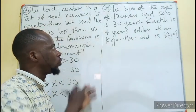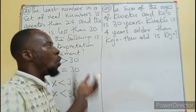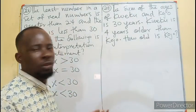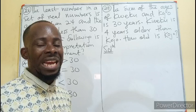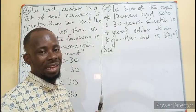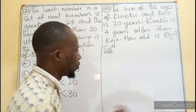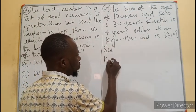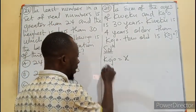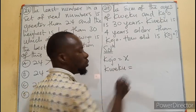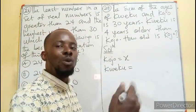Question 29: The sum of the ages of Kweku and Kojo is 30 years. Kweku is four years older than Kojo. How old is Kojo? This is a simple word problem. We identify the smallest person in age. Since Kweku is older, Kojo becomes the smallest. Let's say Kojo equals x.